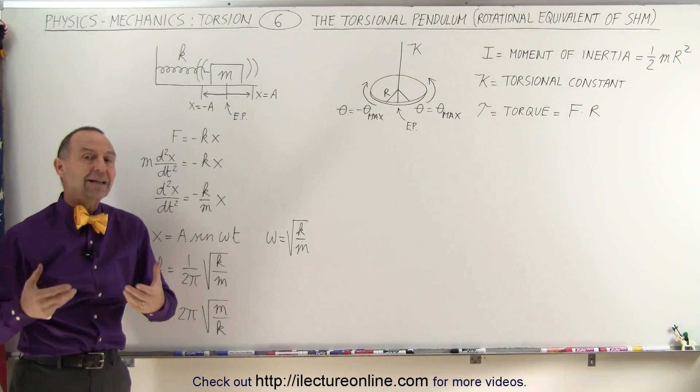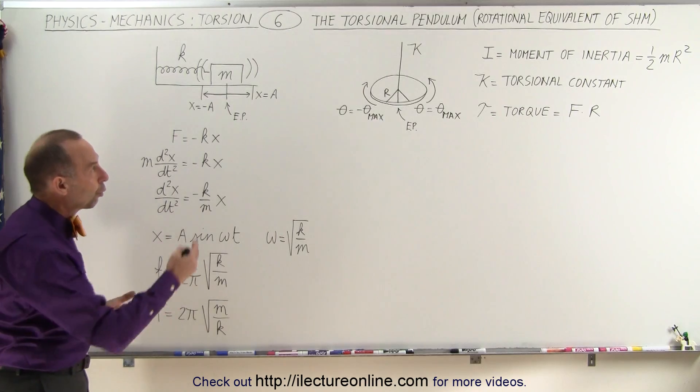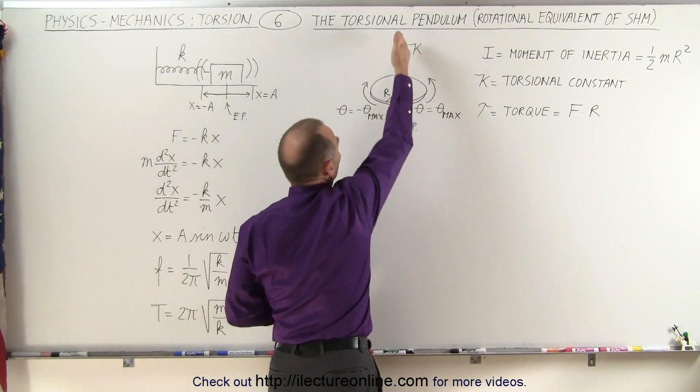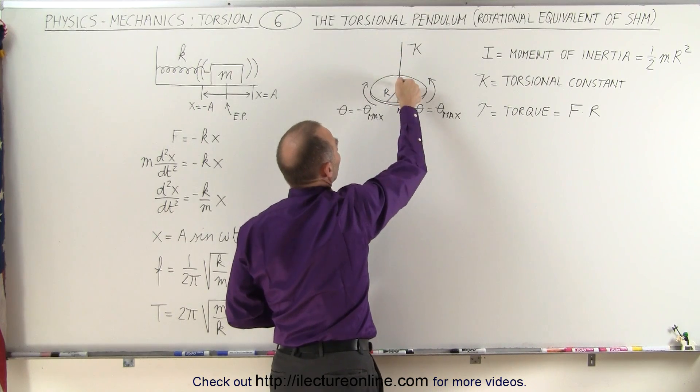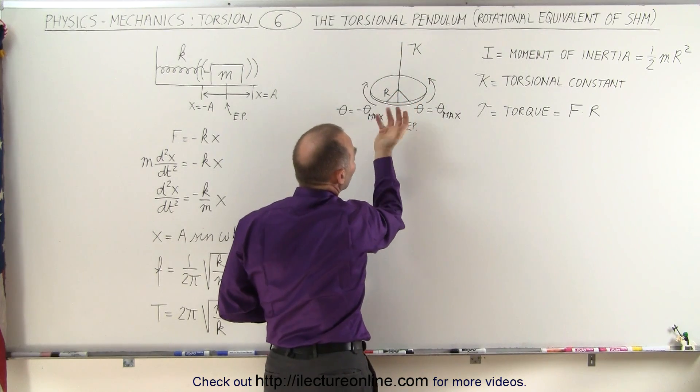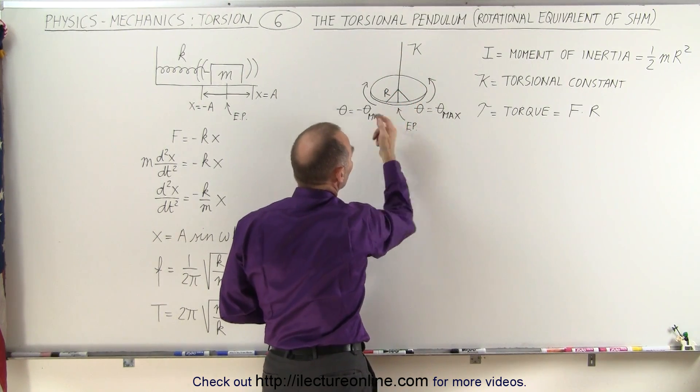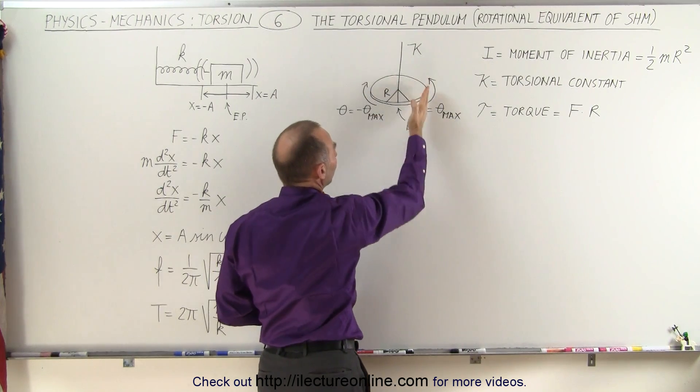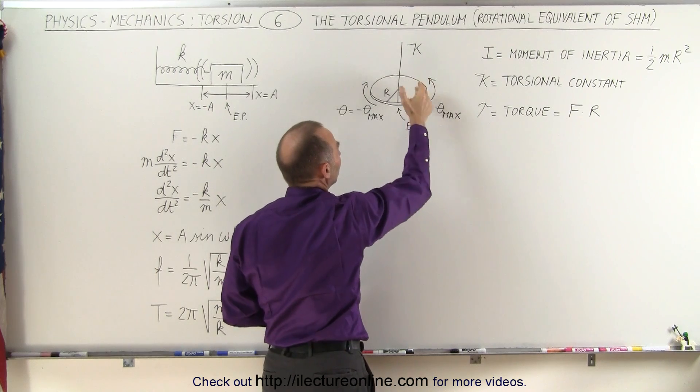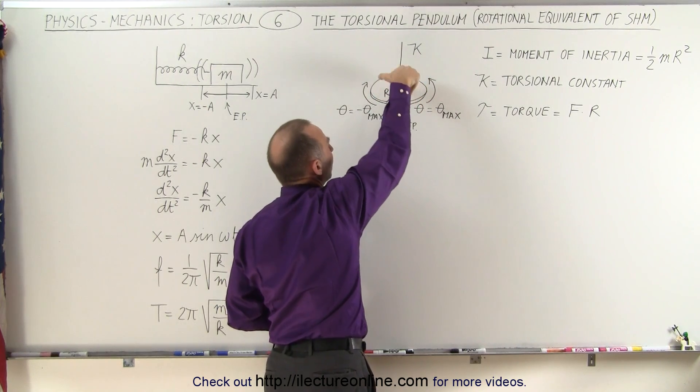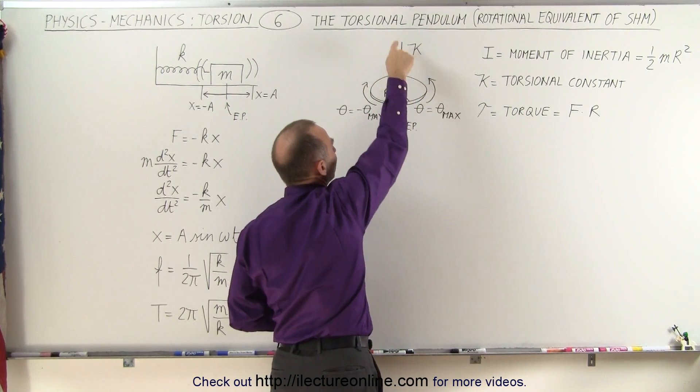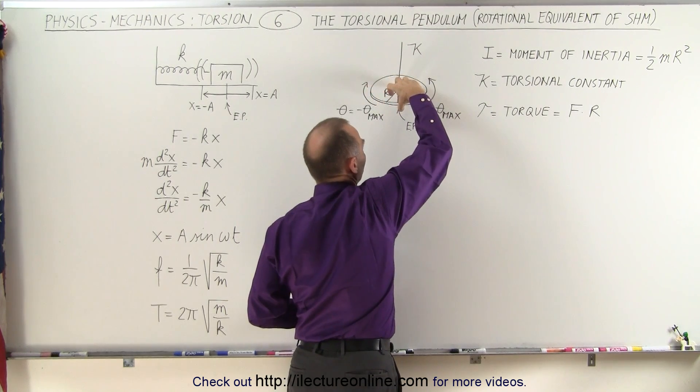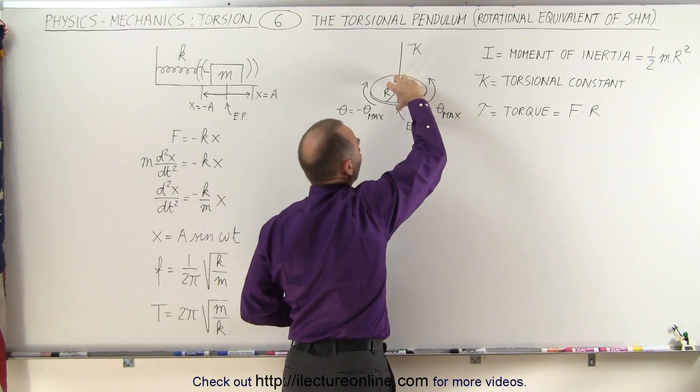Now we can have the exact same equations for a torsional pendulum. The string here, or the rod, whatever this is suspended on, will twist as you bend this back and forth, as you rotate it back and forth. If we apply a force parallel to the side of the disc here, applying a torque, that will then twist this cable, or twist this rod, and then we'll get it to go to its maximum displacement, the maximum twist angle, we let go.